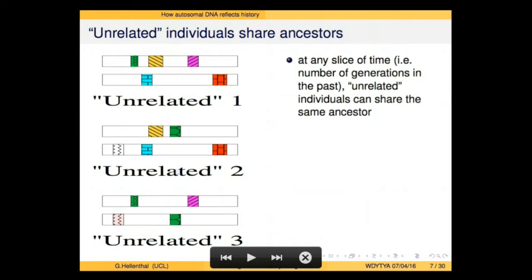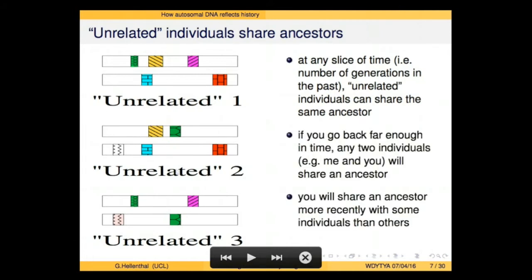For example, this green bit of DNA was inherited by both individual one and individual three, and a yellow segment next to it was inherited by individual one and individual two. In fact, if we go back far enough, any two individuals are going to be related. At some point in each location of my genome, we're going to share an ancestor — it's just a question of how far back. At any particular spot in my genome, I can identify who I'm most closely related to amongst the sample.